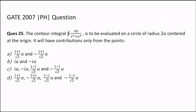Hello everyone, in this video I'm going to solve question number 25 from the 2007 paper on physics. This is a question of complex analysis — an important question. The contour integral of dz upon z to the power 4 plus a to the power 4 is to be evaluated on a circle of radius 2a centered at the origin.